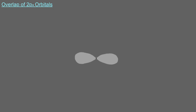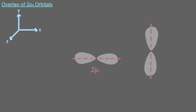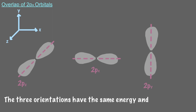As you see, a 2p orbital is shaped like a dumbbell or a peanut. If we consider a three-dimensional axis diagram, we can see that a p orbital can fall along an x-axis (2px), y-axis (2py), or z-axis (2pz). While each of these orientations is positioned differently in space, each of them has the same energy and properties — they just have different orientations.